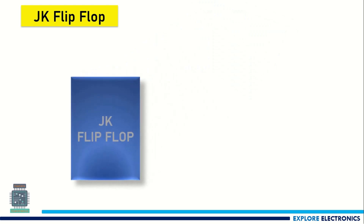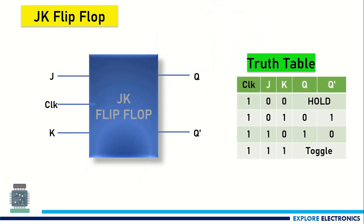As we know, in the JK flip-flop we have inputs called J and K, and this flip-flop is operated with the positive or negative edge of the clock and it generates Q and Q-bar outputs. When the positive edge of the clock is the input with J and K values, this is how the truth table will be.